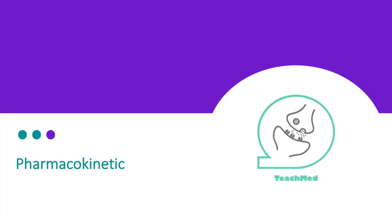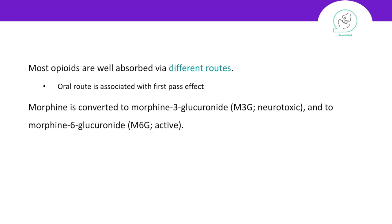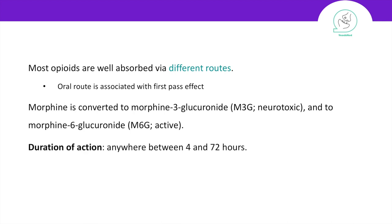Let's talk about the pharmacokinetics of opioids. Opioids can be administered by different routes; however, if taken orally, this can be associated with the first-pass effect, meaning it gets metabolized in the liver, giving you less effect. Morphine can be converted to morphine-3-glucuronide, and if this substance accumulates in the body — such as in someone with renal failure who cannot excrete it — it will cross the blood-brain barrier and cause seizures. Morphine can also be converted to morphine-6-glucuronide, an active form of morphine that adds to its effect. Opioid duration of action is between 4 and 72 hours, metabolized by the liver and excreted by the kidneys.